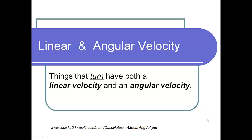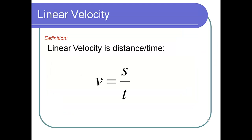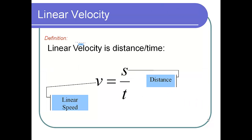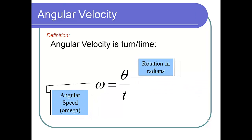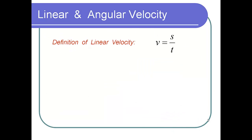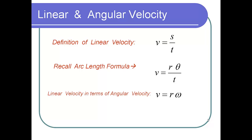Another application of angles is linear and angular velocity. Linear velocity, just like any velocity, is distance divided by time — the linear distance an object travels divided by time. Angular velocity is the amount of turn an object makes in a given time. Angular velocity, called omega, equals theta divided by time. Since linear velocity v equals s over t, and using the arc length formula s = rθ, we get v = rθ/t. So linear velocity equals r times angular velocity omega.